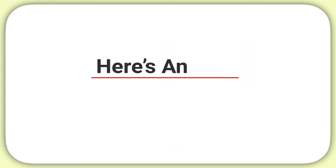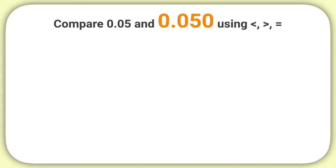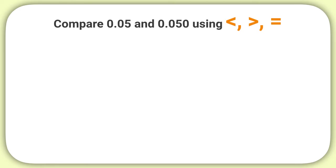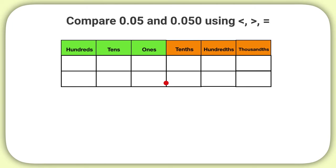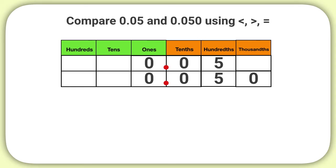Let's try another one. Compare 5 hundredths and 50 thousandths using the less than, greater than, or equal to symbol. Why is it important that I use a place value chart when comparing these numbers? By putting the numbers into the place value chart, this helps me compare digits in the same place value. After putting the numbers into the place value chart and making sure that the decimals are lined up, I can start comparing the numbers.